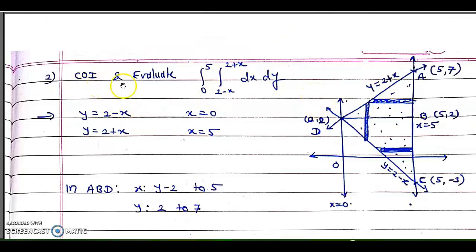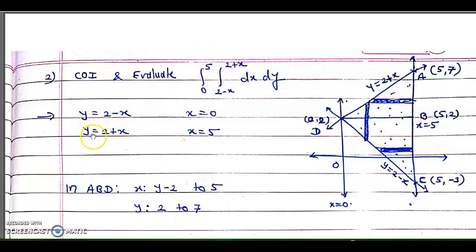Let's see another example: change the order of integration and evaluate. This is a very important example. Integral from 0 to 5, inner integral from 2 − x to 2 + x, dy dx, with integrand 1. The inner integral limits are functions of x, therefore they are the limits of y. It means first they have given y and then x — this is the order of integration: first y then x. Since first is y, a vertical strip has been considered, and we are asked to take a horizontal strip, which is the change of order. These four limits are nothing but four curves, and if we draw them, we get a triangular region.